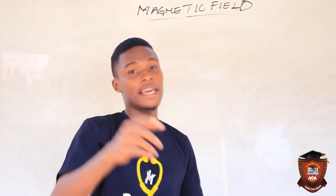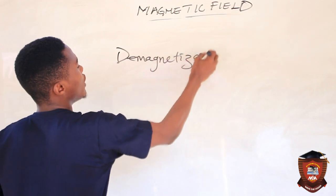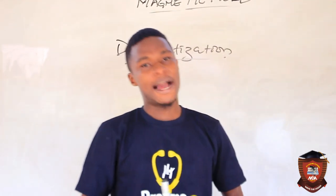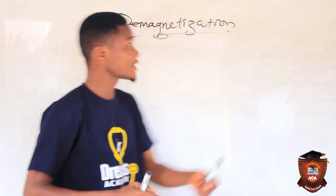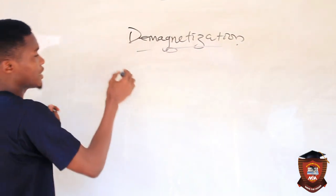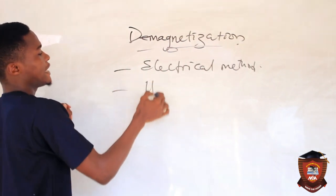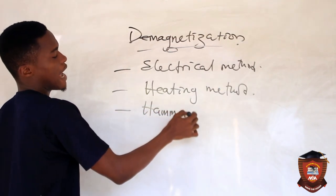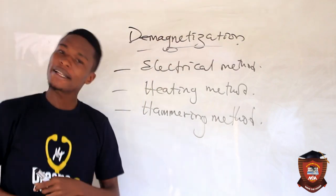Now we are going to talk about the opposite of making magnets — demagnetization. Demagnetization simply means removing magnetism from a substance. There are basically three methods of demagnetization: the electrical method, the heating method, and the hammering method.